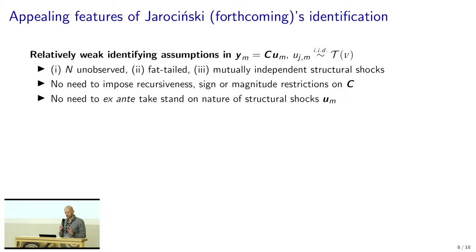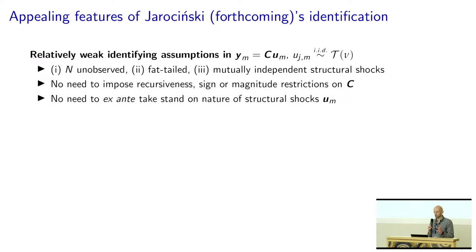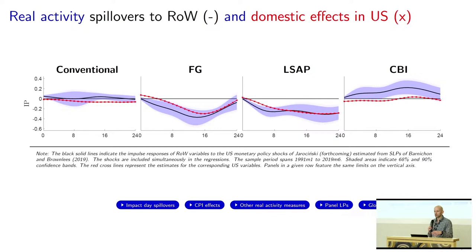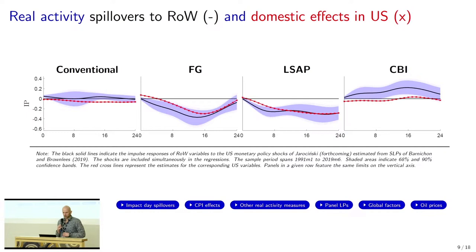This identification approach builds on relatively weak identifying assumptions — namely three: there are N unobserved structural shocks, these are fat-tailed, and they're mutually independently distributed. No recursiveness assumptions are needed, no sign restrictions, no magnitude restrictions, and there's no need to take a stand ex-ante on what these shocks are. Importantly, Marek shows that you can relax or generalize all these identifying assumptions and still end up with essentially the same time series of structural shocks. What we do in this paper is take these structural shocks at the meeting frequency, temporally aggregate them to the monthly frequency, and then look at their effects on macroeconomic and financial variables at business cycle horizons.